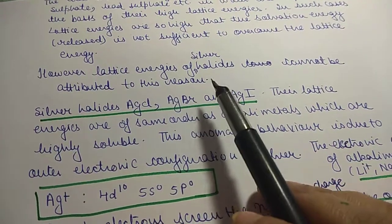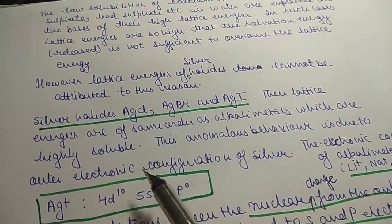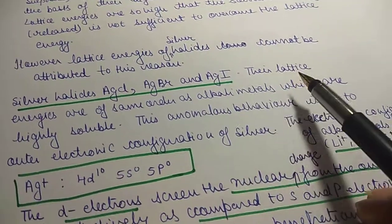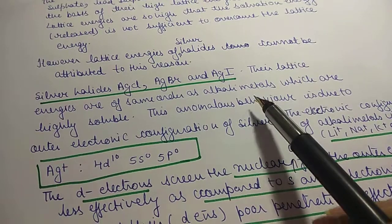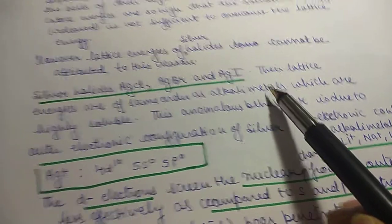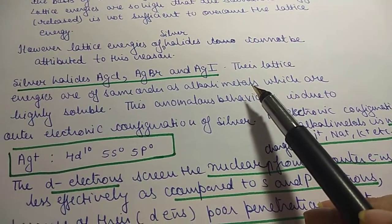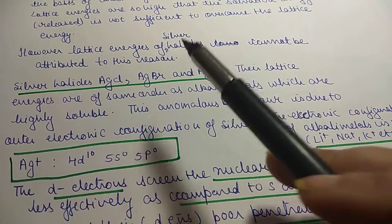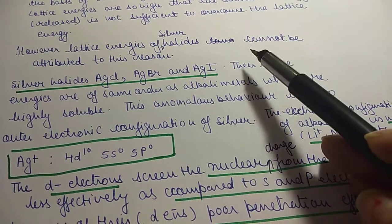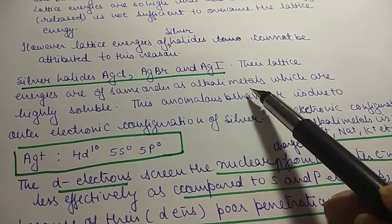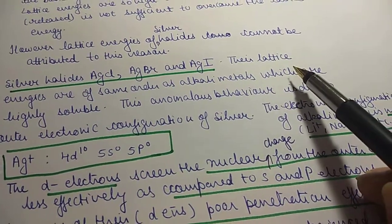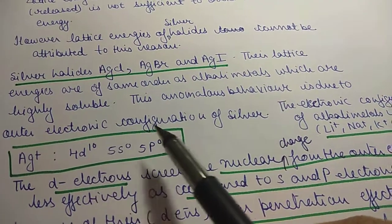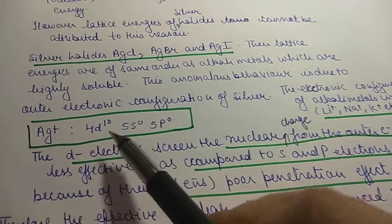However, this case does not apply to silver halides like silver chloride, silver bromide, and silver iodide. Their lattice energy is comparable to that of alkali metal halides, and alkali metal halides are highly soluble in water. So why are silver halides not soluble in water?